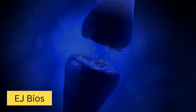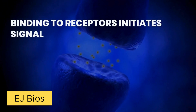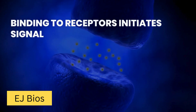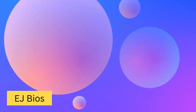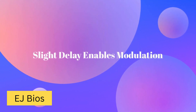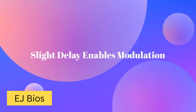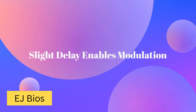These bind to receptors on the post-synaptic neuron, initiating a new electrical signal. This process involves a slight delay and allows for modulation, enabling complex signaling.